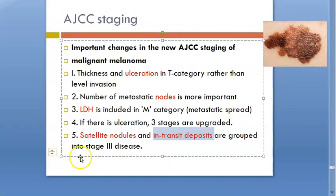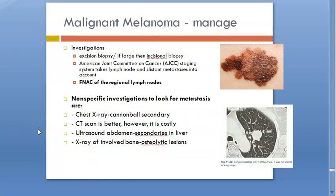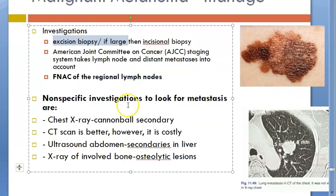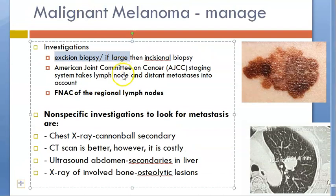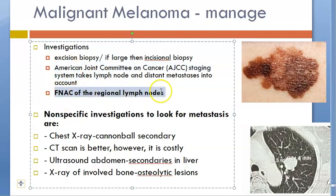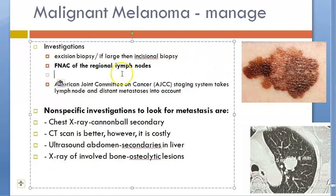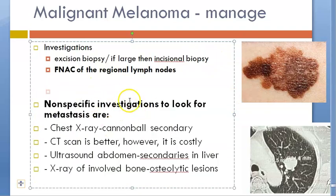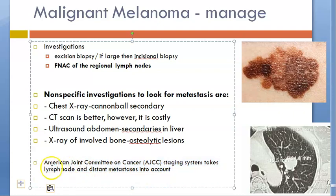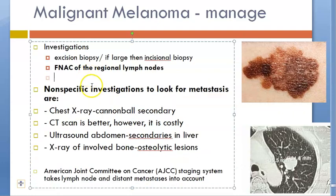Now we are back to management. You will take an excisional biopsy if it is a small lesion, or an incisional biopsy if it is a large one to avoid disfigurement. Then you do a lymph node FNAC. Then you look for metastasis with chest X-ray, CT scan, and ultrasound. Based on this AJCC staging system, you stage the disease.